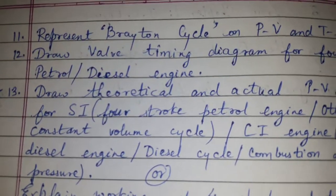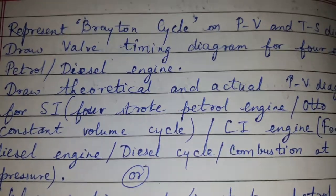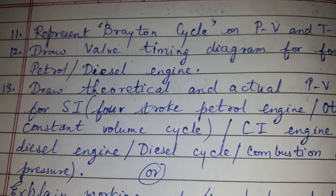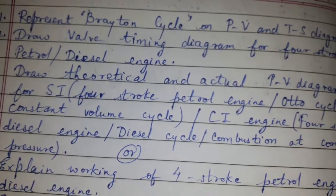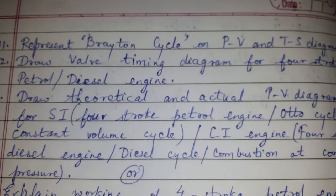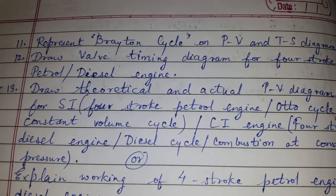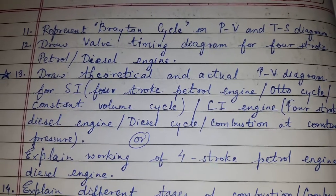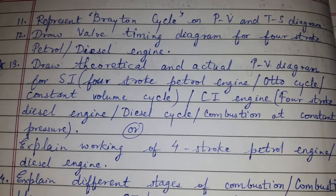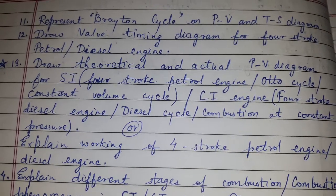Question number eleven: represent the Brayton cycle on PV and TS diagrams. Question number twelve: draw the valve timing diagram for a four-stroke petrol or diesel engine. Draw the theoretical and actual PV diagram for an SI engine, which is a four-stroke petrol engine.